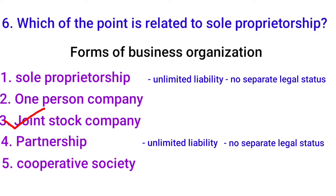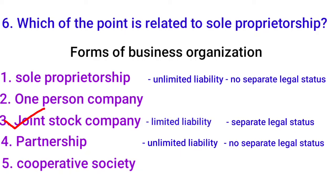Third form: joint stock company — also known as a corporation. It has many shareholders who are co-owners. Shares represent ownership. This company has a separate legal status. Remember, joint stock company has limited liability — shareholders only lose what they invested. If the company has losses, only the company's assets are used to pay debts; shareholders' personal assets are not touched.